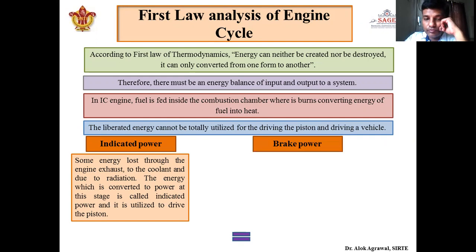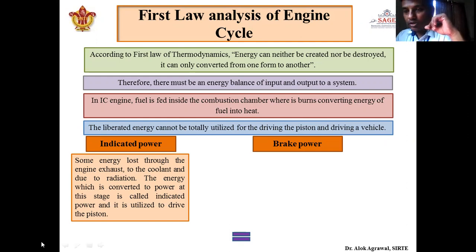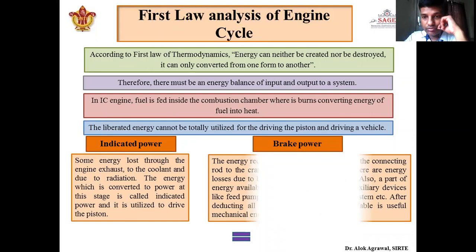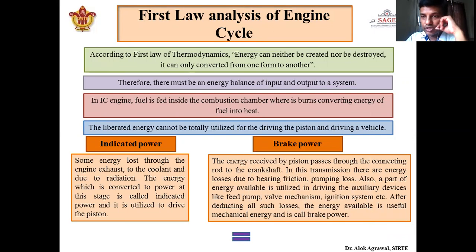Next is brake power. Once indicated power is obtained — which is used to drive the piston — the total energy as indicated power will not be 100% converted to drive the vehicle. The energy received by the piston will pass through the connecting rod to the crankshaft. In this transmission there are certain losses such as bearing friction, pumping loss, and various other losses.